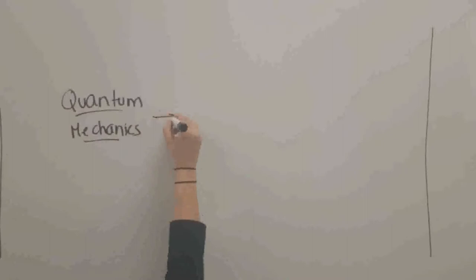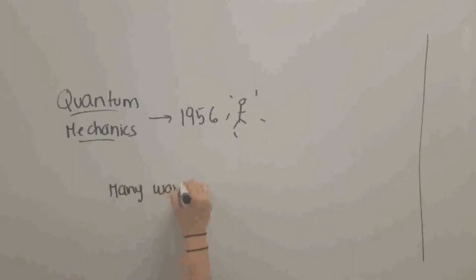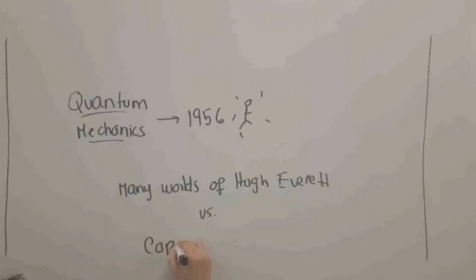The many worlds interpretation of quantum mechanics was proposed in 1956 by Hugh Everett in an attempt to resolve the conceptual issues that arose from the measurement problem. In order to understand the controversy that his proposal caused, we first have to get a clear view of the accepted interpretation of the time.